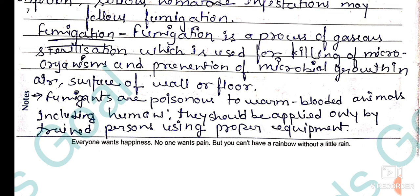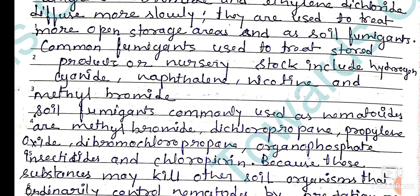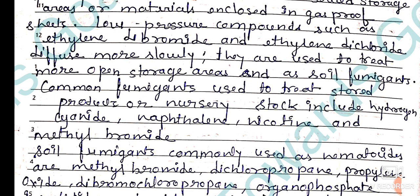Fumigation is a process of gaseous sterilization used for killing microorganisms. It is used for insects, pests, and nematodes in the soil — to kill disease-causing nematodes and pests. They work like insecticides and nematocides, and soil fumigants are specifically used to kill nematodes in the soil.